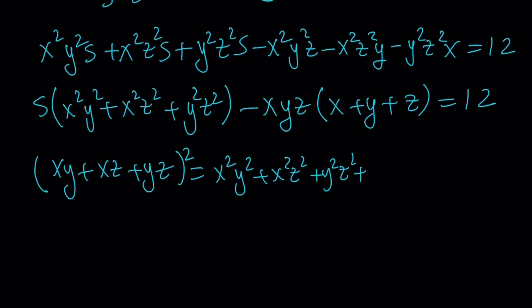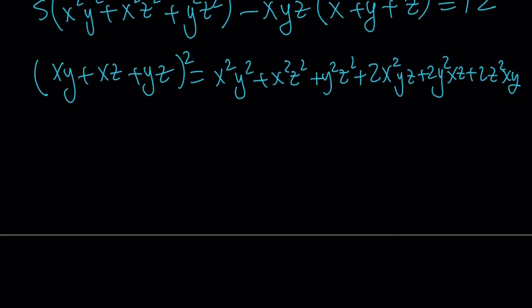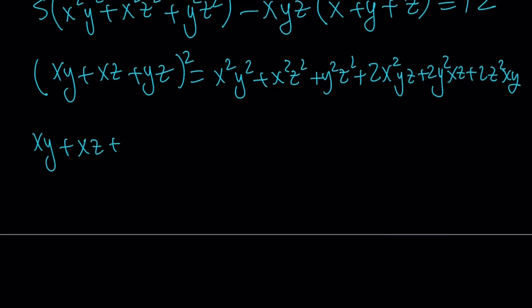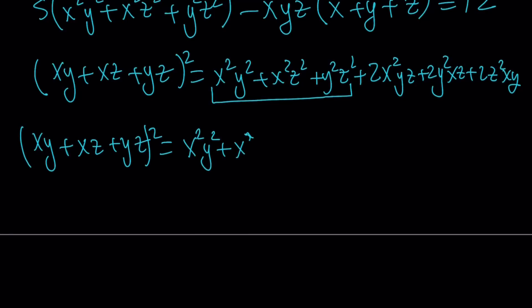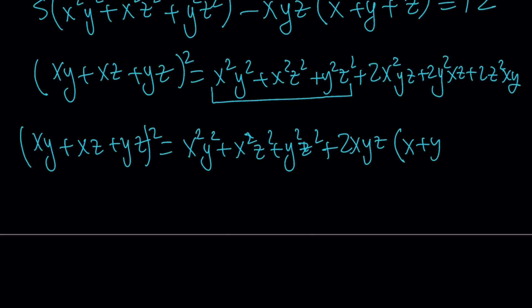So 2x squared yz plus 2y squared xz plus 2z squared xy. We can reorganize this: the first part is what I'm looking for, and the rest can be factored as 2xyz times (x plus y plus z), which is 2ps. So our sum and product appear once more.